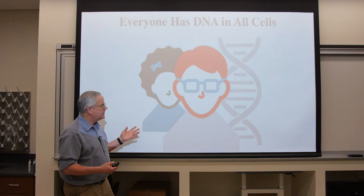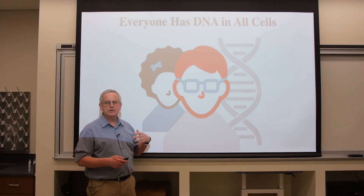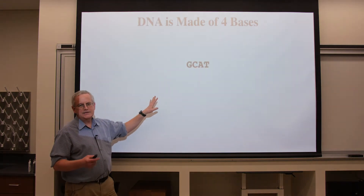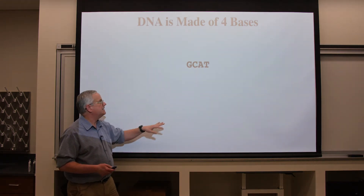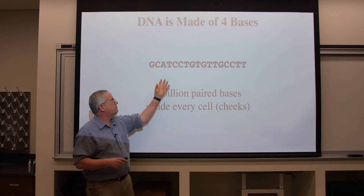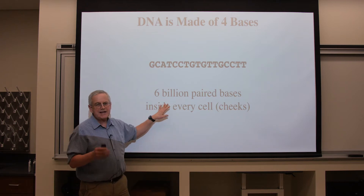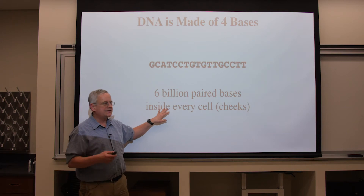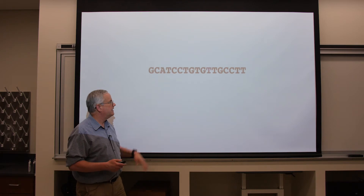We're going to talk about your heritage using DNA as a source of historic information that goes back much, much more than any oral history can do. Everybody has DNA inside them, and all of your DNA is made up of four bases: G, C, A, and T. You have six billion base pairs in your DNA across different chromosomes, and it's the same in every cell in your body. So we can sample any cell — that's why we'll swab some of your cheek cells to know what DNA is inside you.